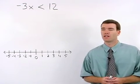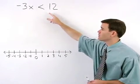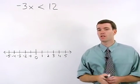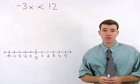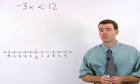When you're asked to solve an inequality like negative 3x is less than 12, your goal should be the same as it was when solving equations, to get x by itself on one side.